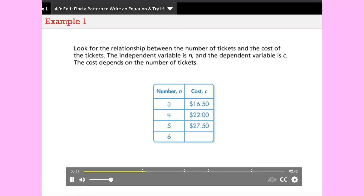Look for the relationship between the number of tickets and the cost of the tickets. The independent variable is n and the dependent variable is c. The cost depends on the number of tickets. To make sense of the problem, find the price of one ticket.